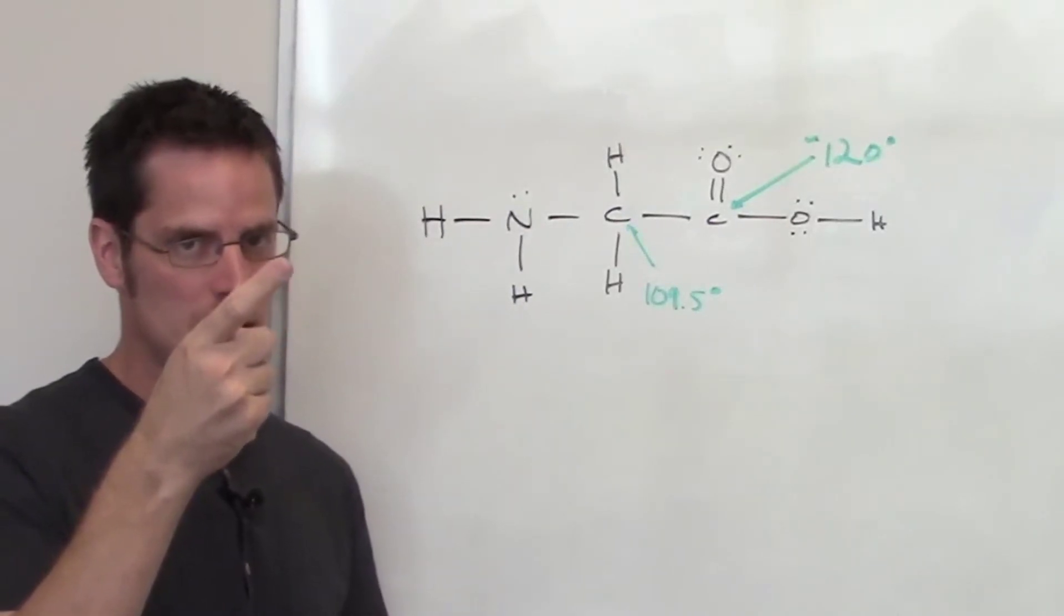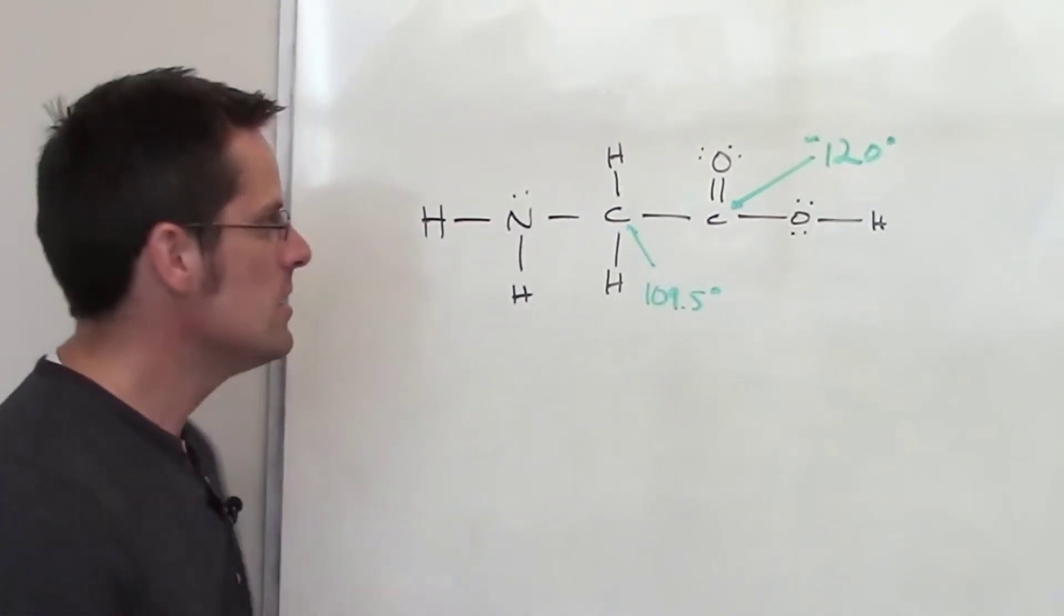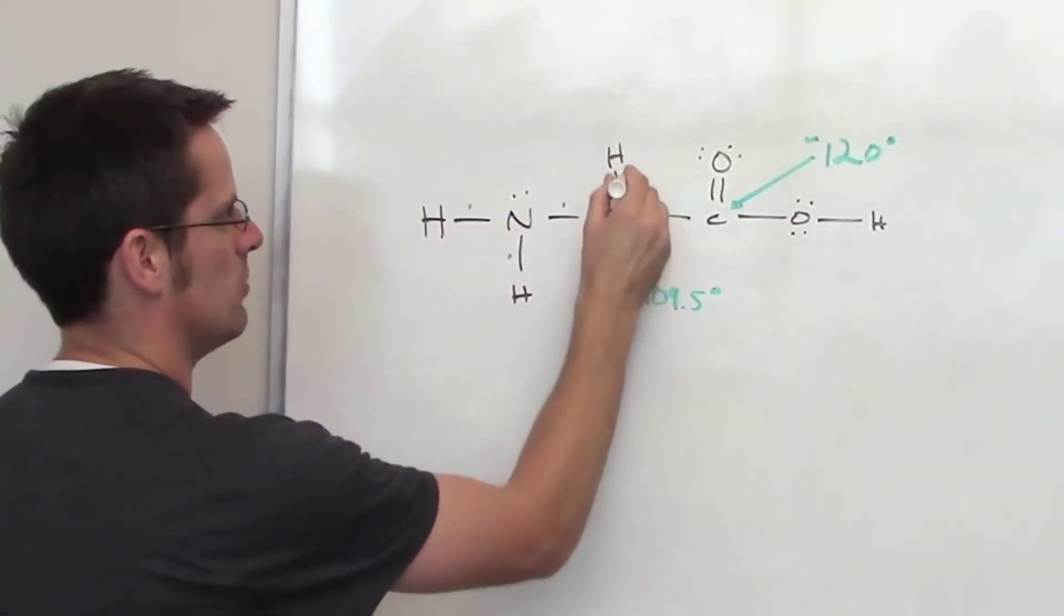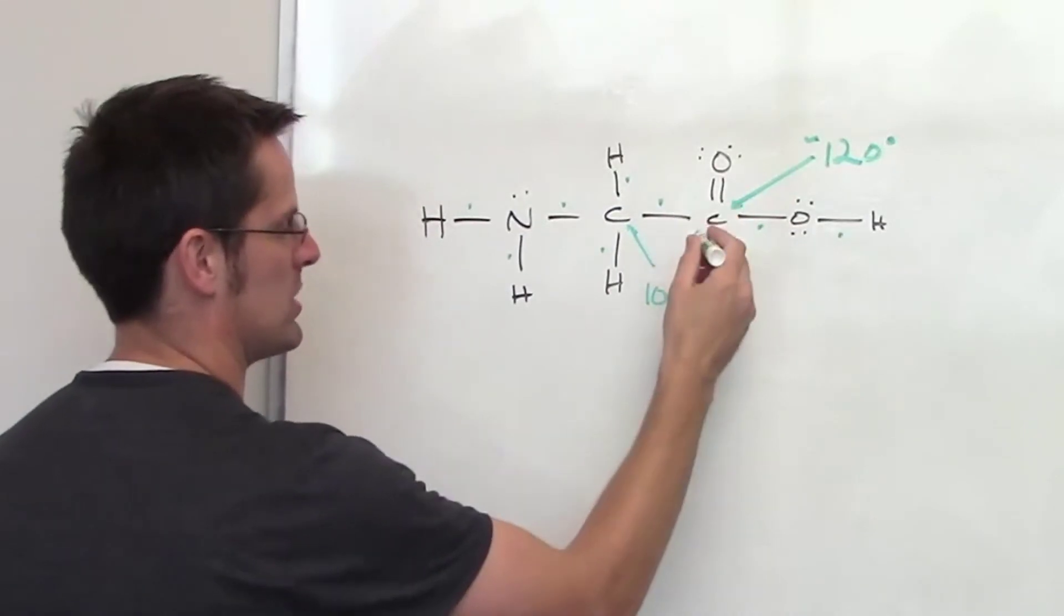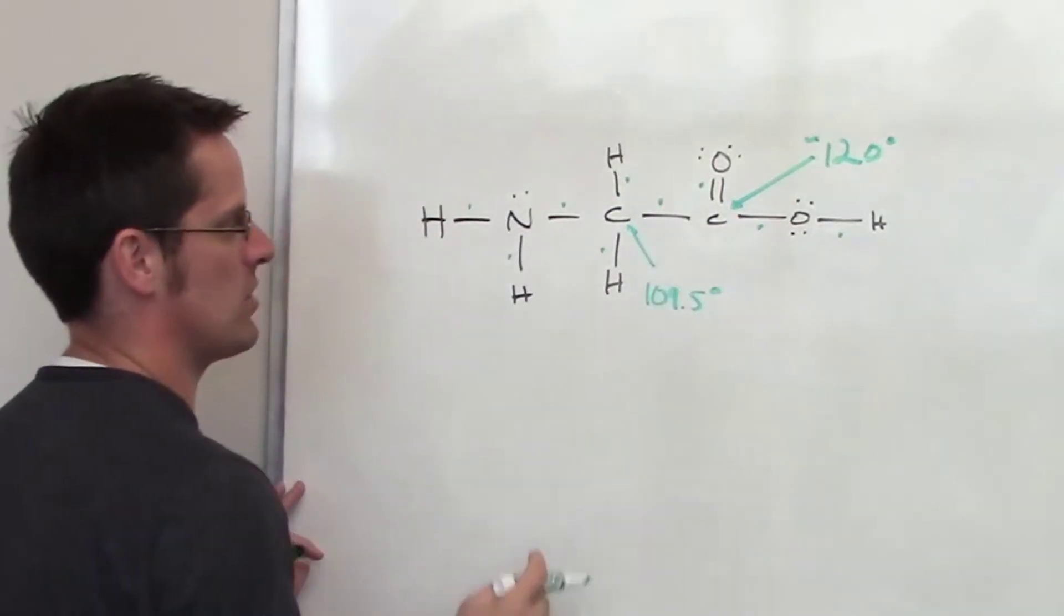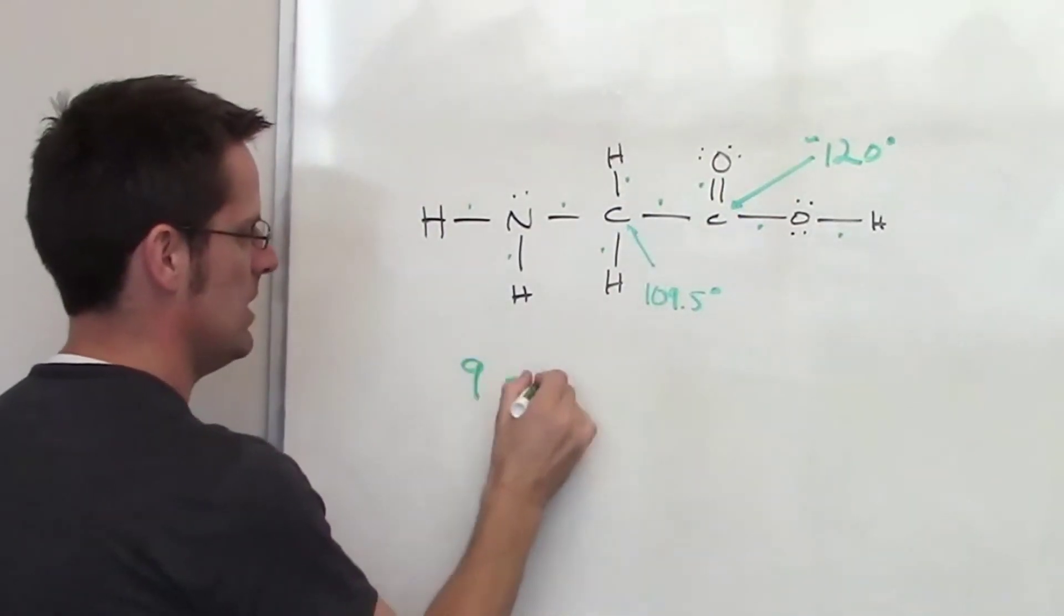contains one sigma and one pi. So let's count up my sigmas: I've got one, two, three, four, five, six, seven, eight, and I've got a double bond which contains one sigma, so that's nine sigmas. It asks me then...